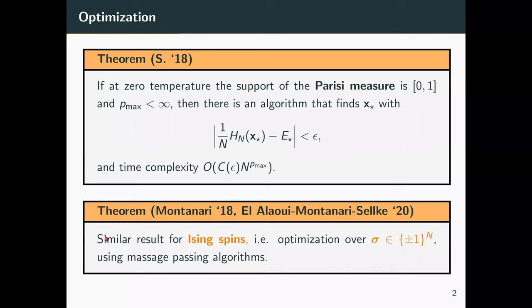Before I move on, I want to mention that in the Ising case, namely when you optimize over the hypercube instead of the hypersphere, a similar result was derived by Montanari for the SK model and more generally for mixed models by El Alaoui, Montanari and Celci.